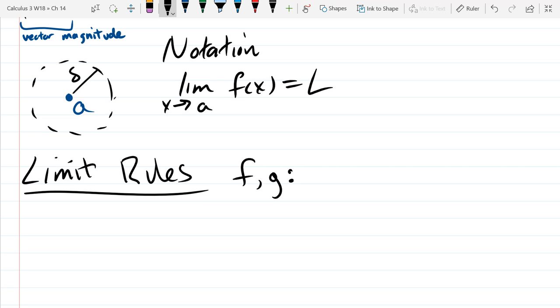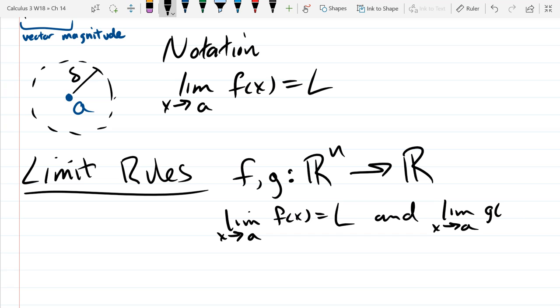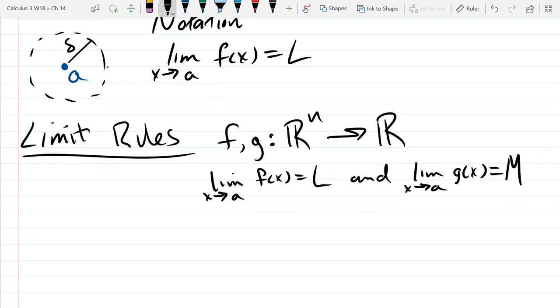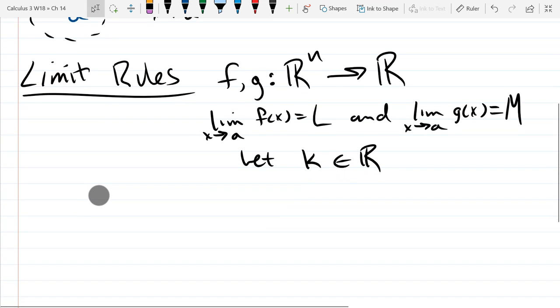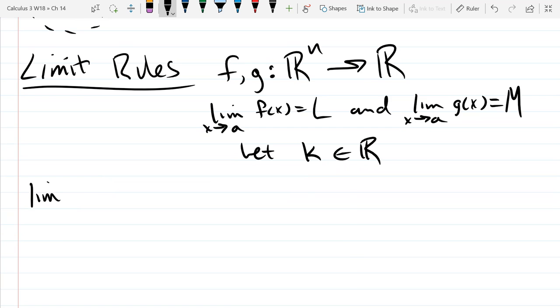We'll take both f and g are going to go from R n into R. And limit as x approaches a f of x will equal L. And lim x approaches a g of x will equal M. And we'll let k any constant. So write down the rules. Alright, what about the limit of a number as x approaches a? Is gonna equal k.